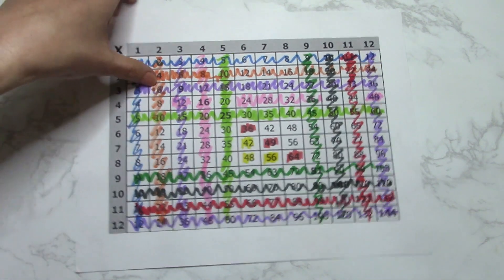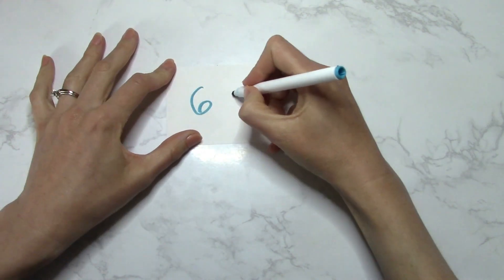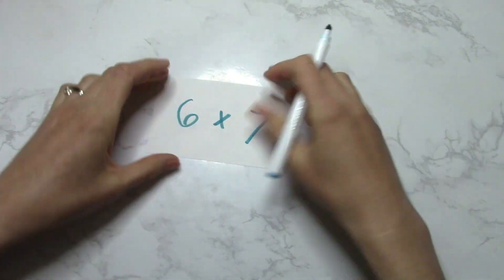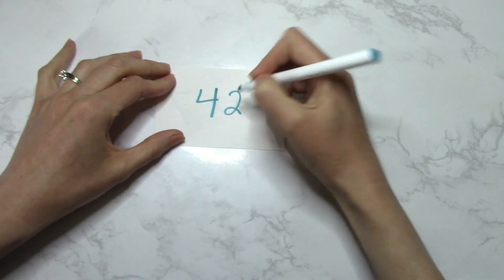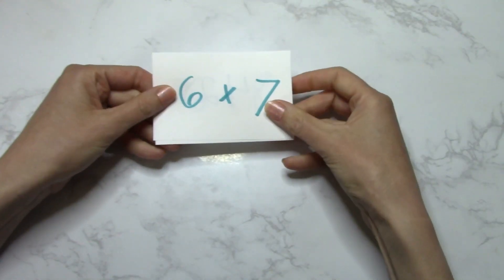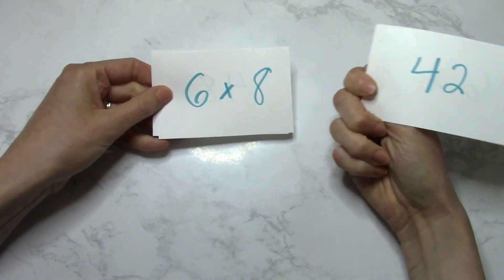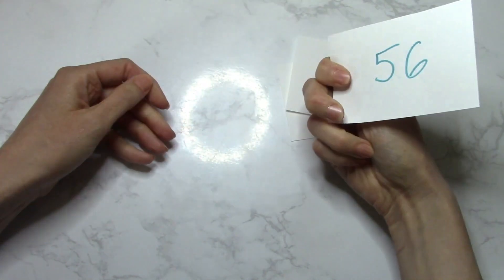So we're going to make note cards. And now I take these note cards and quiz myself. Quick, 6 times 7? 42. 6 times 8? 48. 7 times 8? 56.